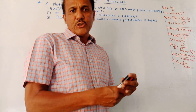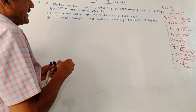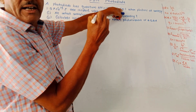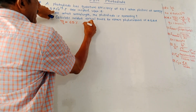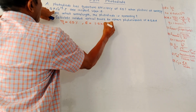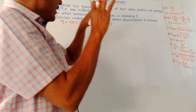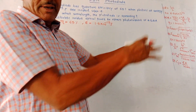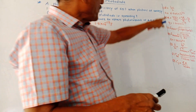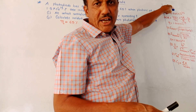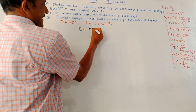Now let us solve a few numericals related to photodiodes. The first problem: a photodiode has a quantum efficiency of 65%, so η = 0.65. Photons of energy 1.5 × 10⁻¹⁹ joules are incident upon it. First part: at what wavelength is the photodiode operating? We use the formula E = hc/λ, where h is Planck's constant and c is the speed of light.